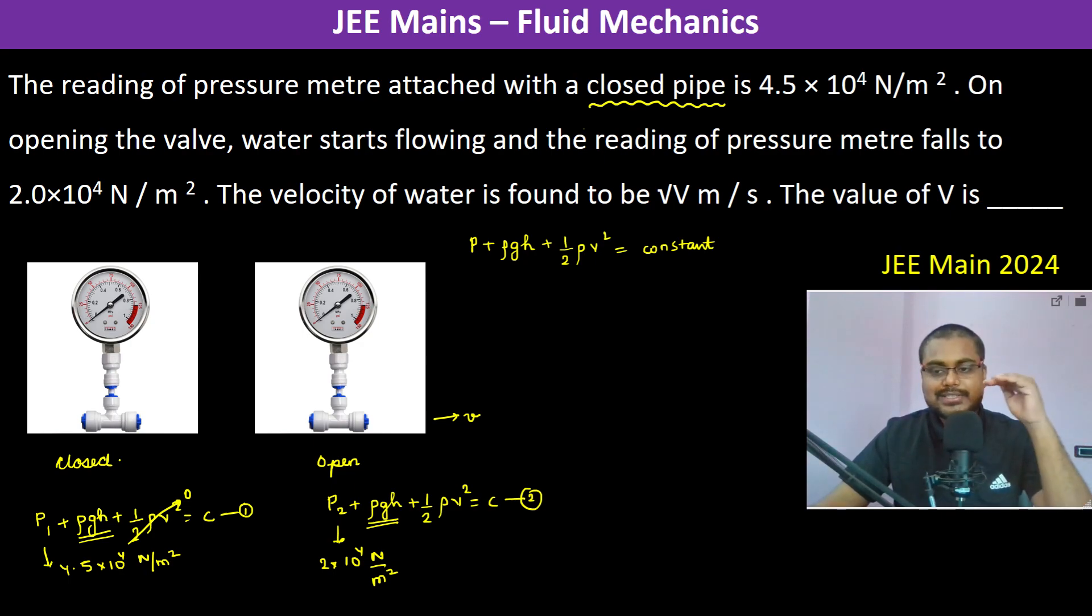Because both are at the same horizontal level, the h that is the pressure head is going to be the same. So now equating both 1 and 2 we get 4.5 into 10 to the power 4 Newton per meter square is equal to 2 into 10 to the power 4 Newton per meter square plus half into rho into V square.